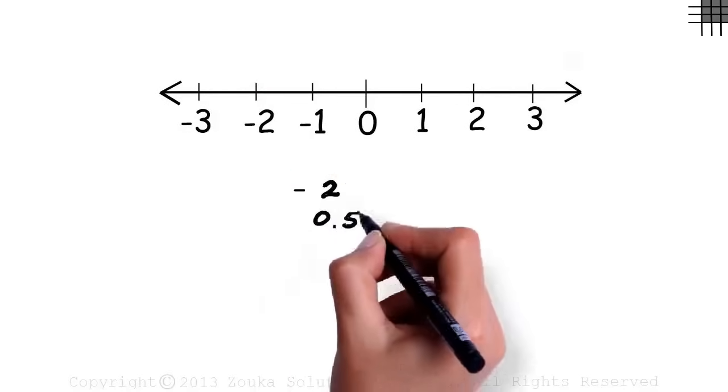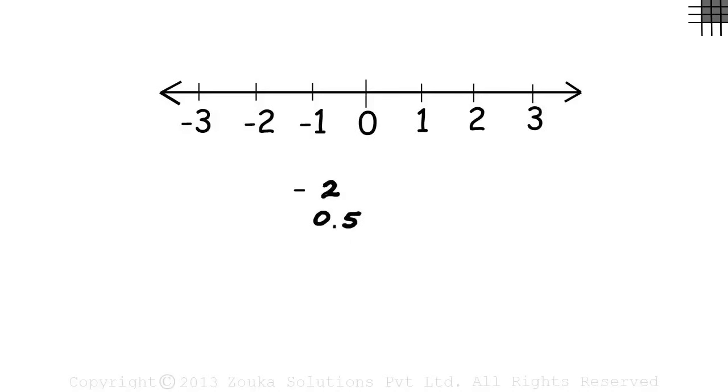What about zero point five? Even though it's not an integer, it can be plotted on the number line. It will be somewhere here.